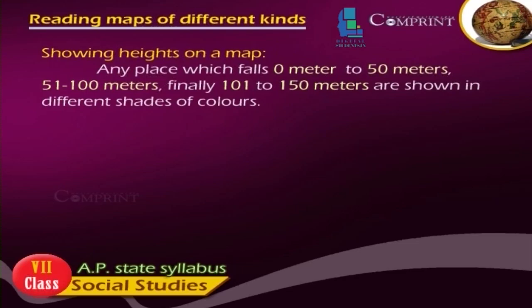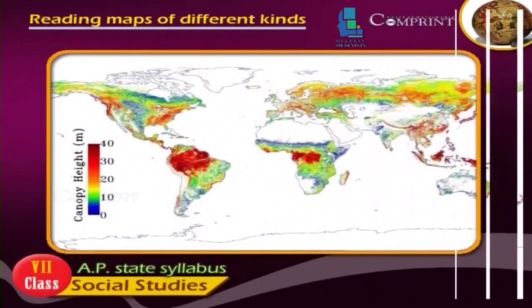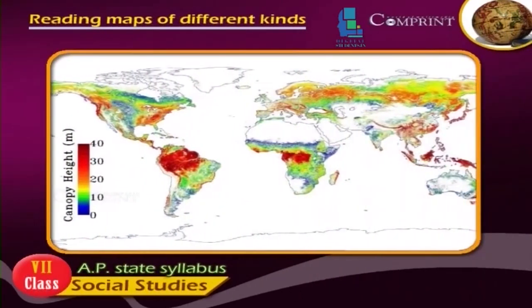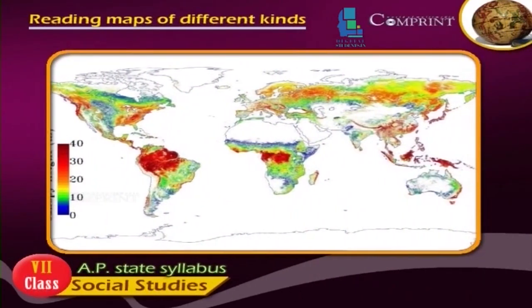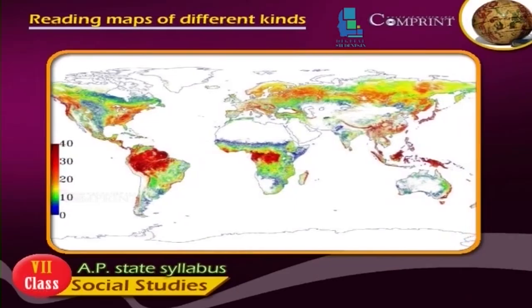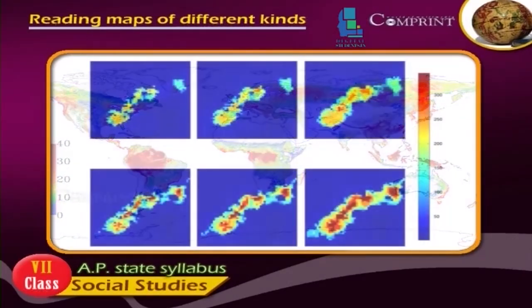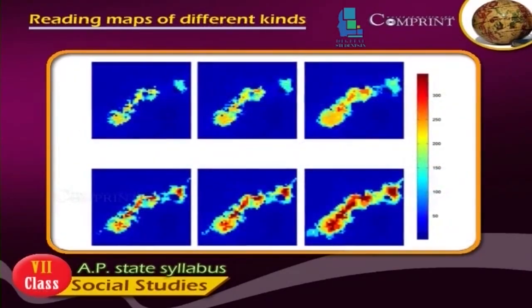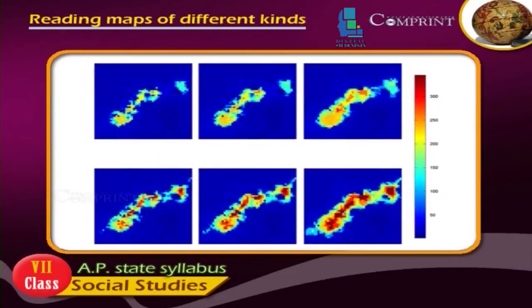Showing heights on a map: any place which falls 0–50m, 51–100m, and finally 101–150m are shown in different shades of colors.